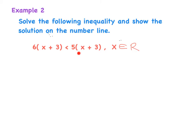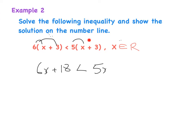Example two requires a little more work — it requires multiplication to work out brackets. Here we've got x is an element of ℝ, the real numbers, which includes all numbers. We start by expanding the brackets: 6 multiplied by x gives 6x, and 6 multiplied by plus 3 gives plus 18, which is less than 5 multiplied by x giving 5x, and 5 multiplied by 3 giving plus 15.